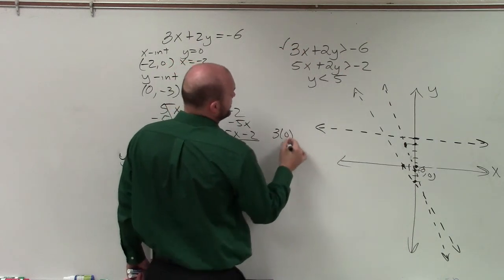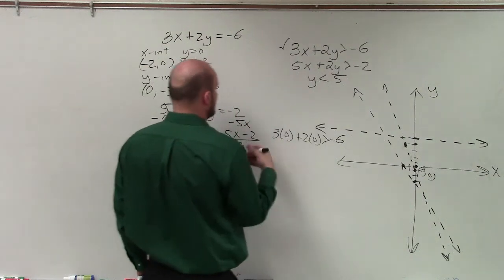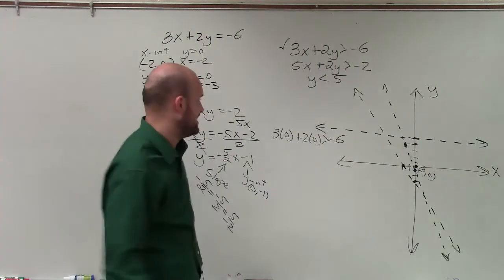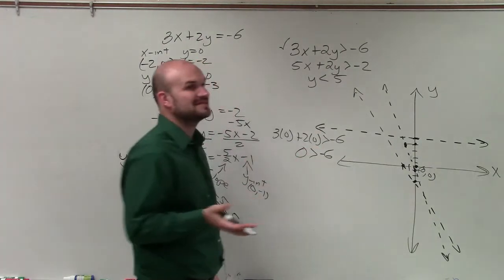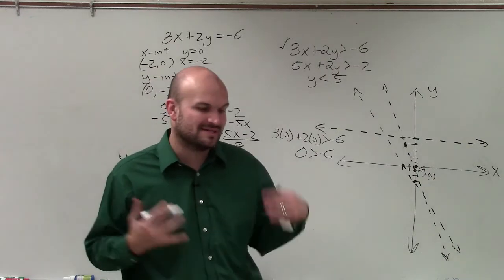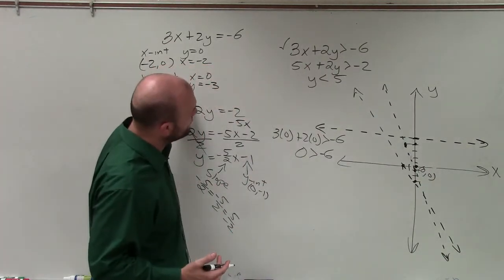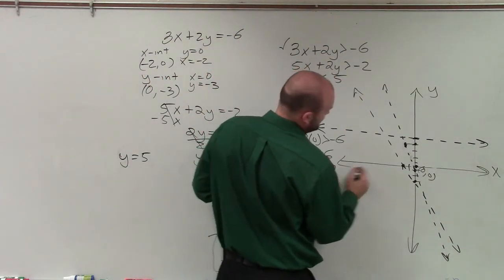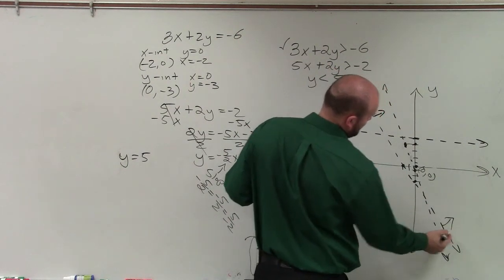So let's do the first one. So I have 3 times 0 plus 2 times 0 is greater than negative 6. I used the equations to help me graph, but now I'm using inequalities to help me shade and determine dashed or solid. So here I have 0 is greater than negative 6. So in this case, that is true. So since it's true, I am going to shade above this line.